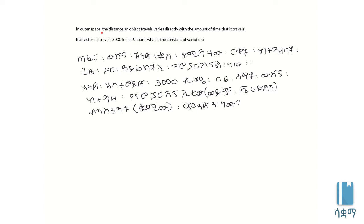In outer space, the distance an object travels varies directly with the amount of time that it travels. If an asteroid travels 3,000 kilometers in six hours, what is the constant of variation?